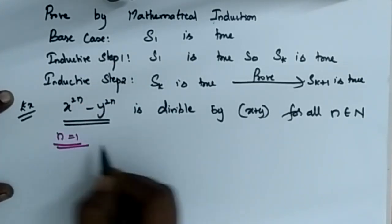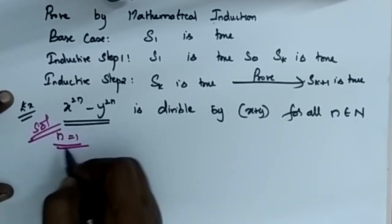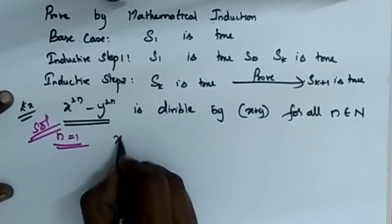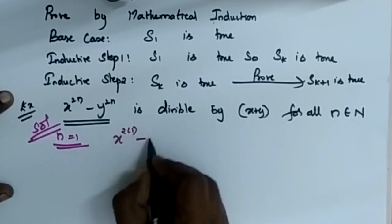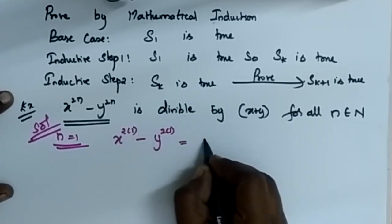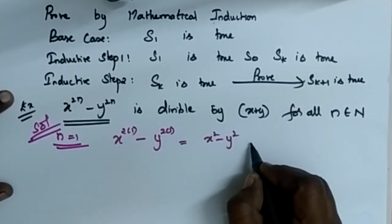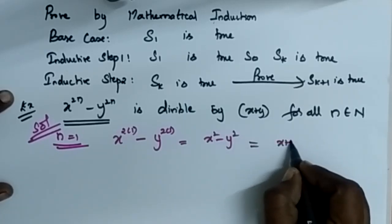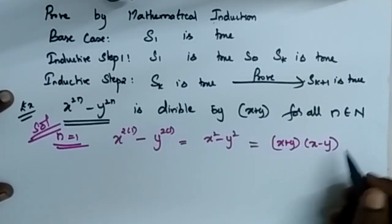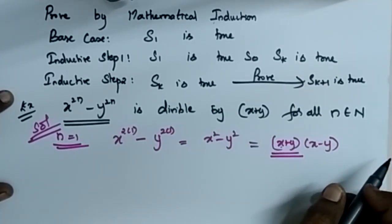We consider N is equal to 1. Now entering the solution with N equal to 1: when I substitute 1, I will have X power 2 into 1 minus Y power 2 into 1, which is equal to X squared minus Y squared. This X squared minus Y squared can be replaced as X plus Y into X minus Y. So from this we understand that it is a multiple of X plus Y.